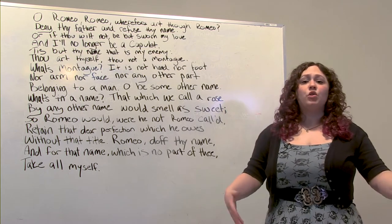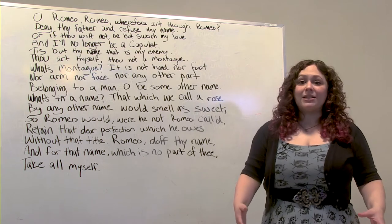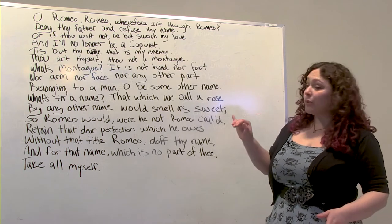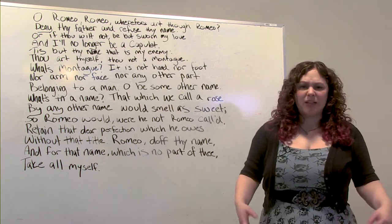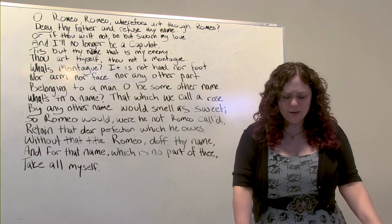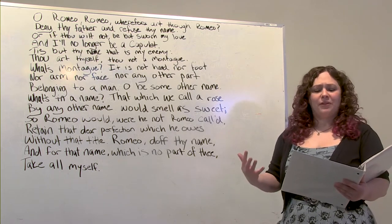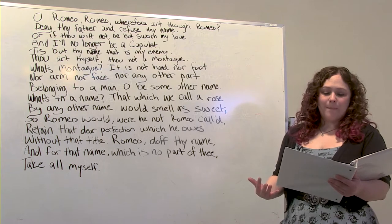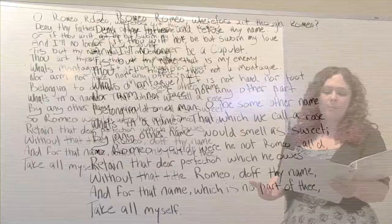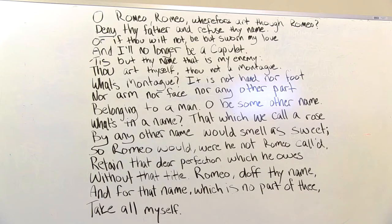Since Shakespeare is designed to be performed, let's start off by just reading through this soliloquy. So have a stand up, look at the text, do your best Shakespearean voice, and say: O Romeo, Romeo, wherefore art thou Romeo? Deny thy father and refuse thy name. Or if thou wilt not, be but sworn my love, and I'll no longer be a Capulet.